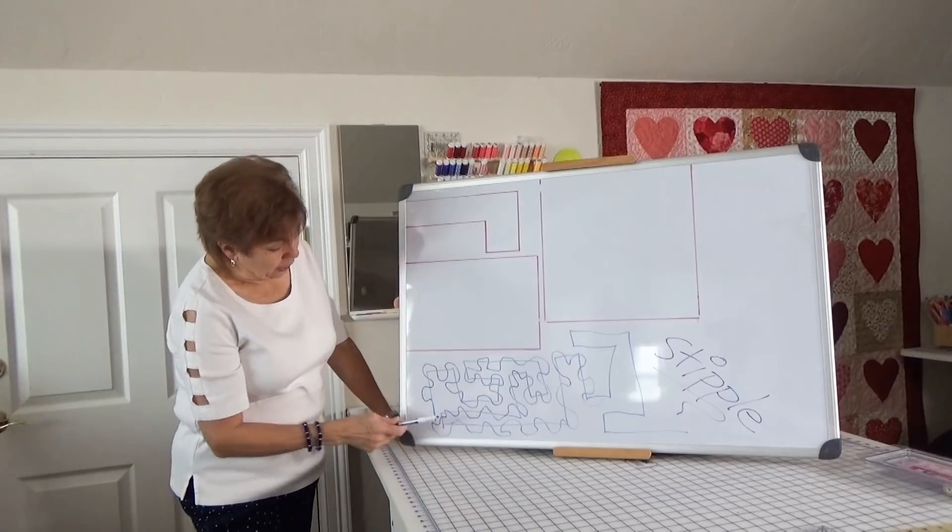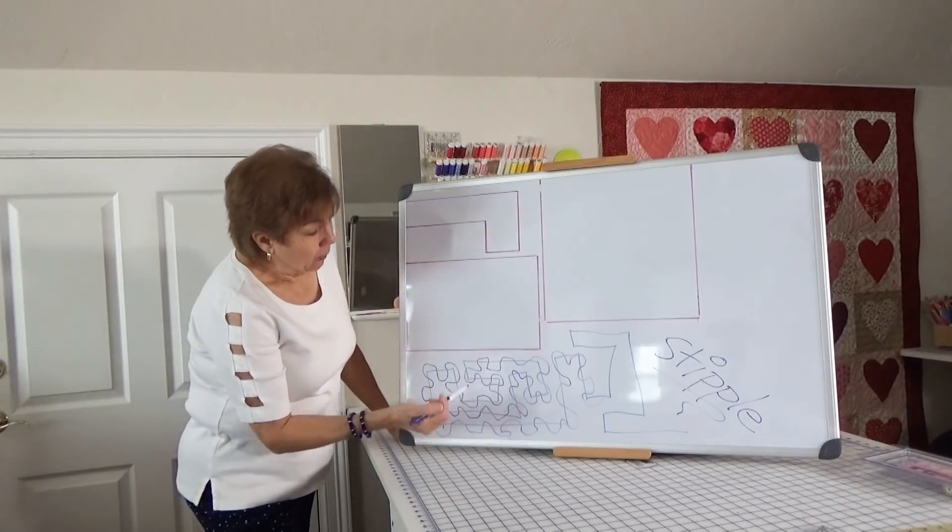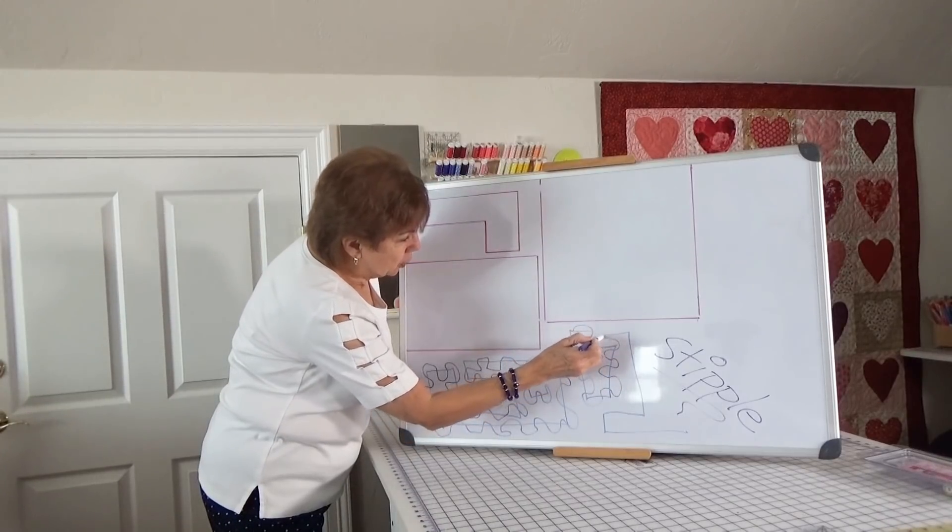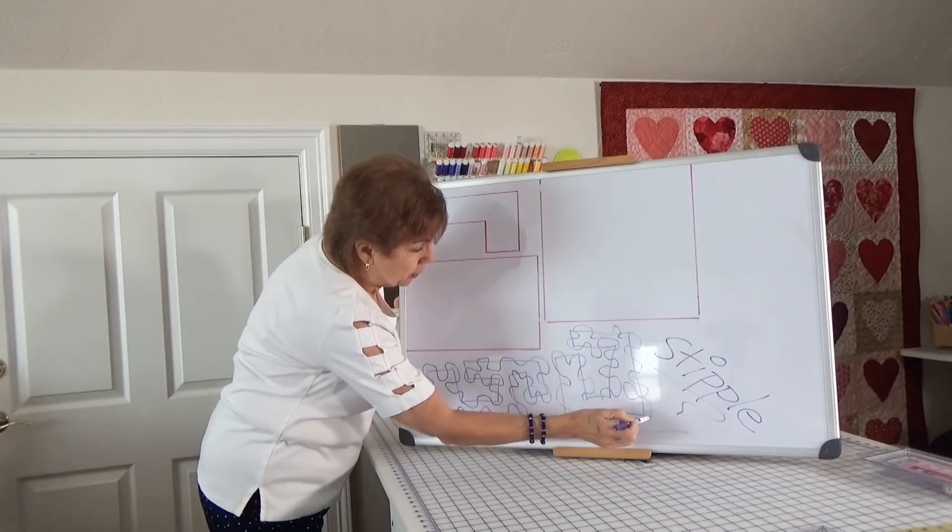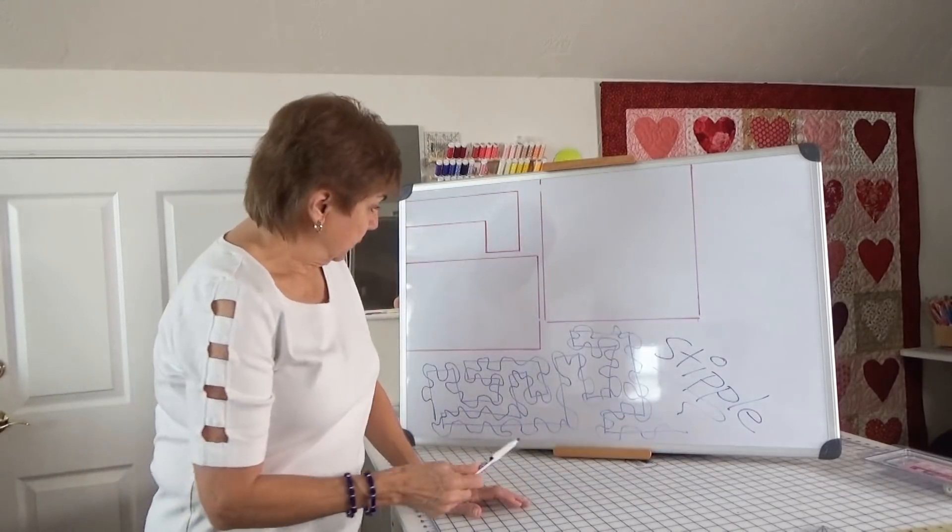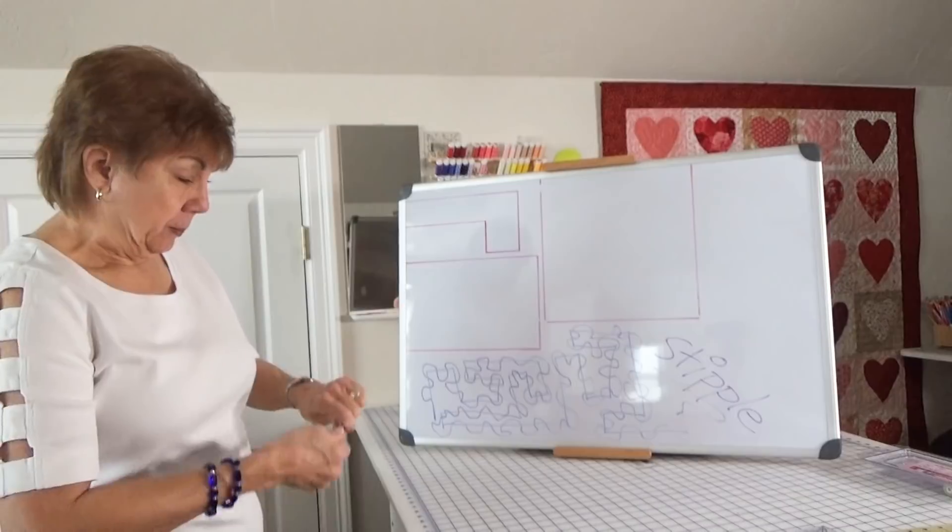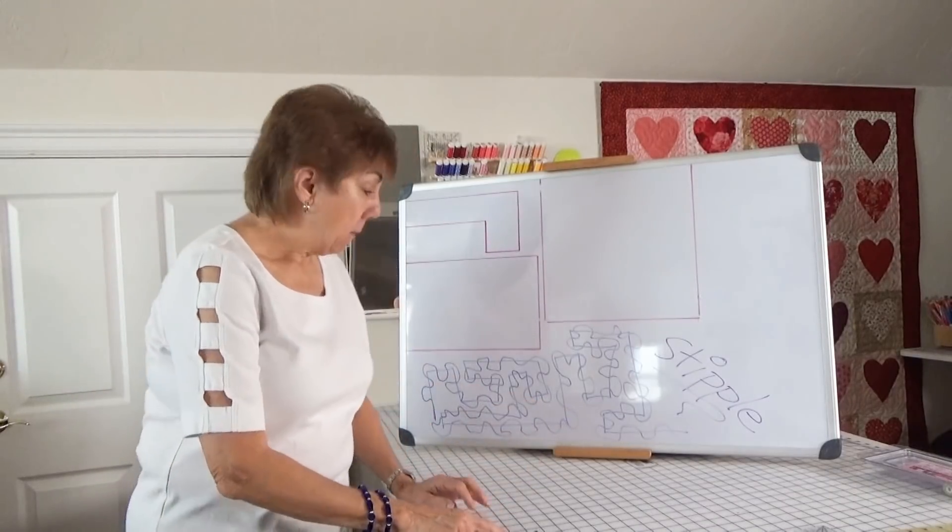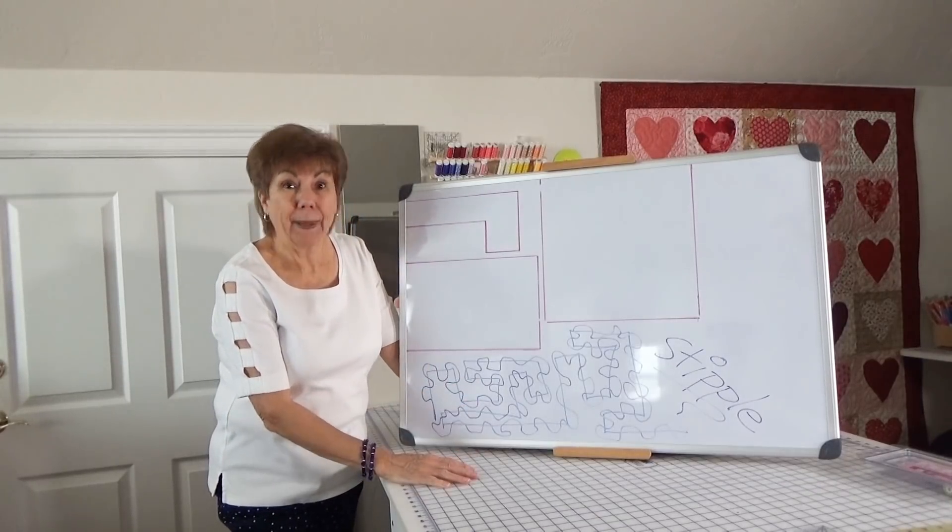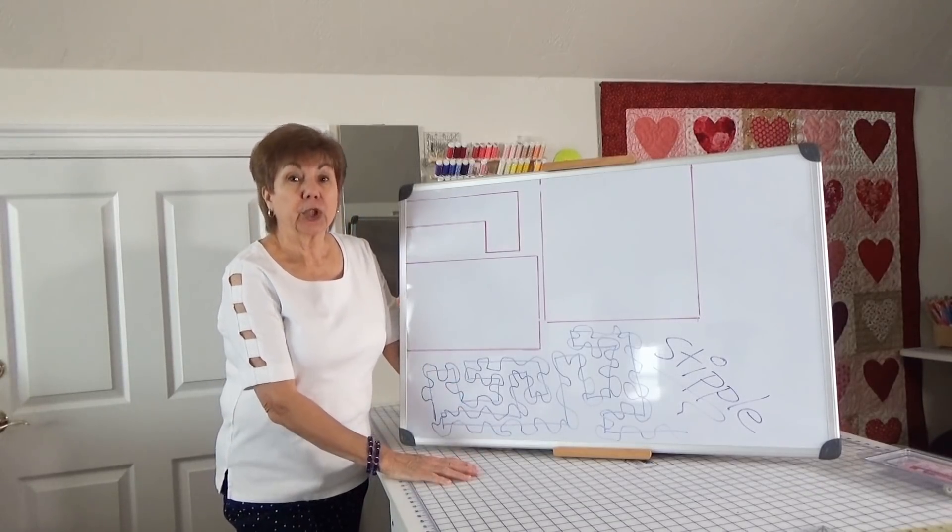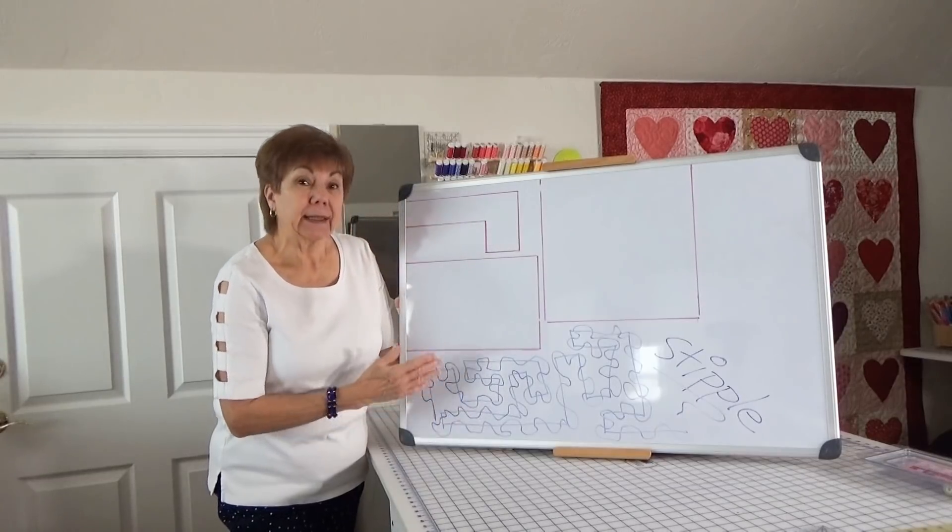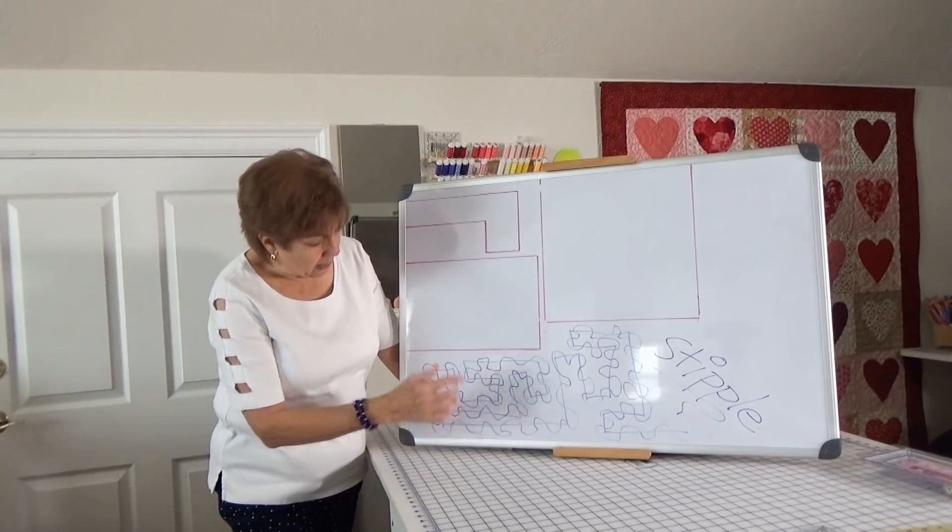So now if the blue wasn't there, you can see how that would be a stipple for a background. It took me a while to learn how to do this. Now let me tell you something else about stipple. Stipple is like handwriting. And 200 people could come up here and do what I just did with the same exact blue path. Say everybody had the same blue path, but everybody was going to do their stipple on it. Every single one would look different because everybody has different handwriting. So this is my kind of handwriting.